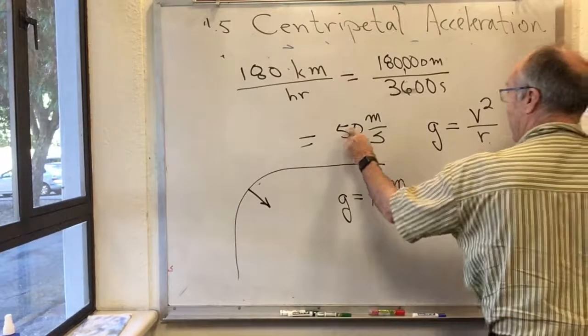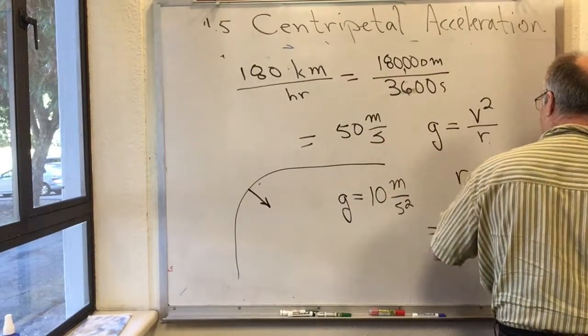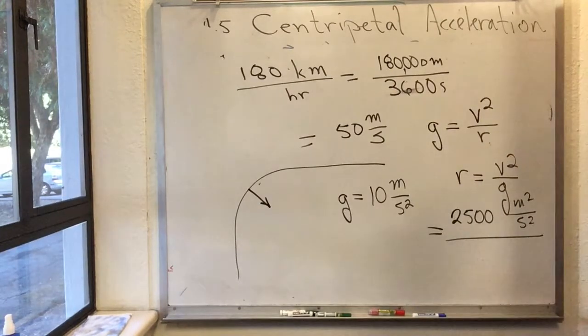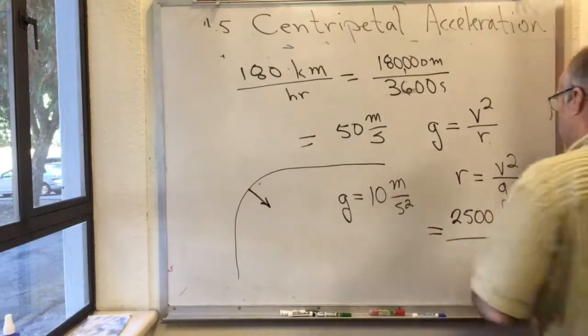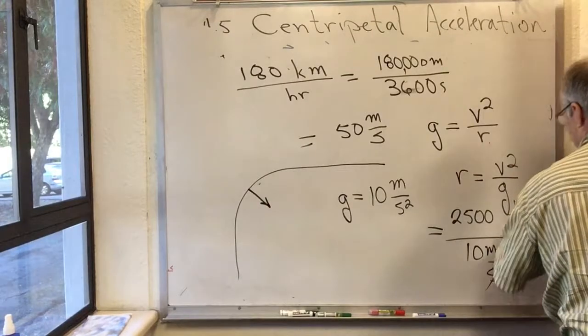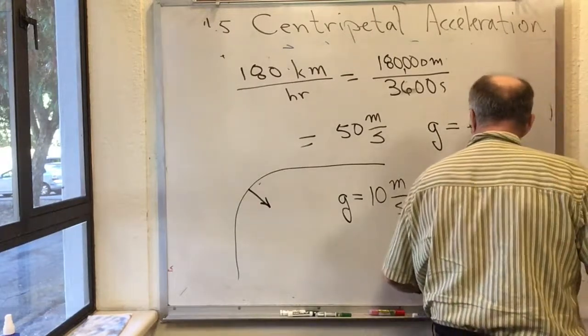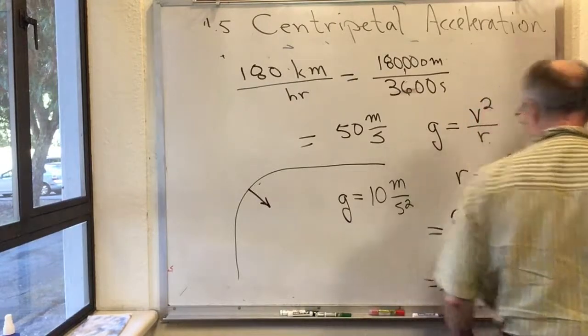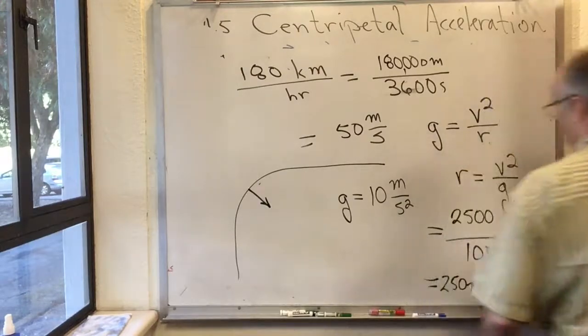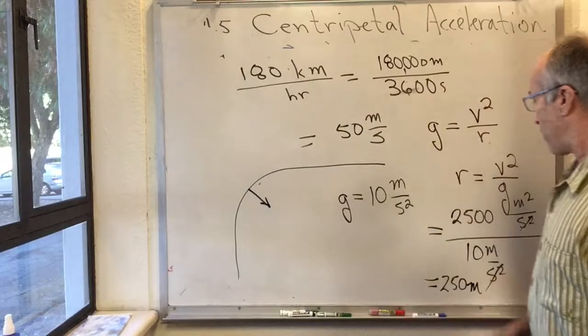Now, v squared would be 50 meters per second squared, so that's 2,500 meters squared per second squared. And g, I said, is 10 meters per second squared. Now, let's the second squareds cancel. 2,500 over 10 is 250. Meters squared is in the numerator. Meters in the denominator.